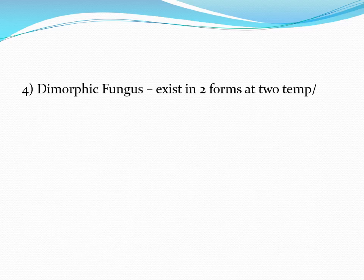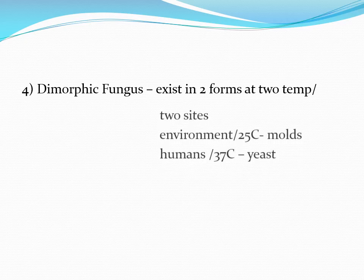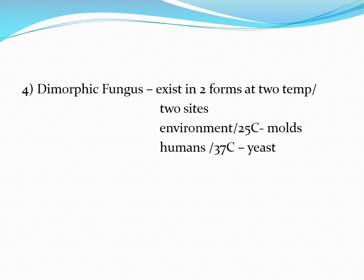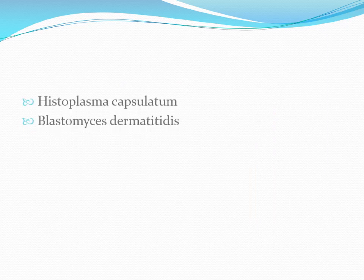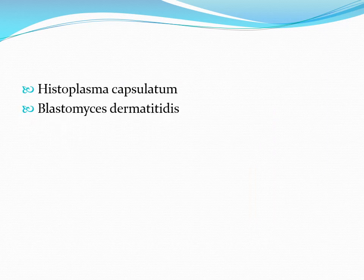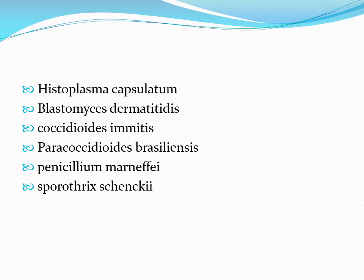The fourth form is dimorphic fungi — they exist in both yeast and mold forms depending on conditions. In the environment at ambient temperature of 25°C they exist as molds, and in the human body at 37°C they exist as yeast. Examples of dimorphic fungi include Histoplasma capsulatum, Blastomyces, Coccidioides, Paracoccidioides, Penicillium, and Sporothrix. All of these cause systemic diseases.